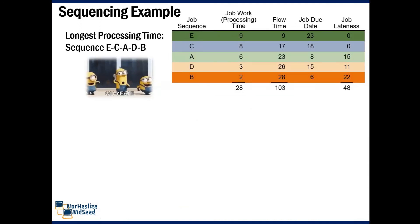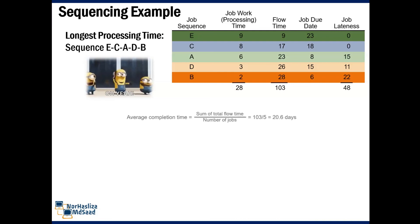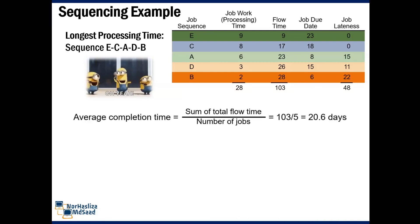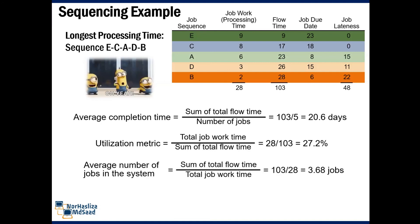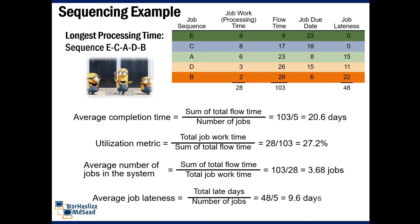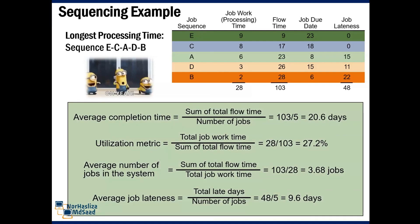After gathering all the information on total job work time, flow time, job due dates, and job lateness, we can compute the average completion time, utilization metric, average number of jobs in the system, and finally average job lateness.